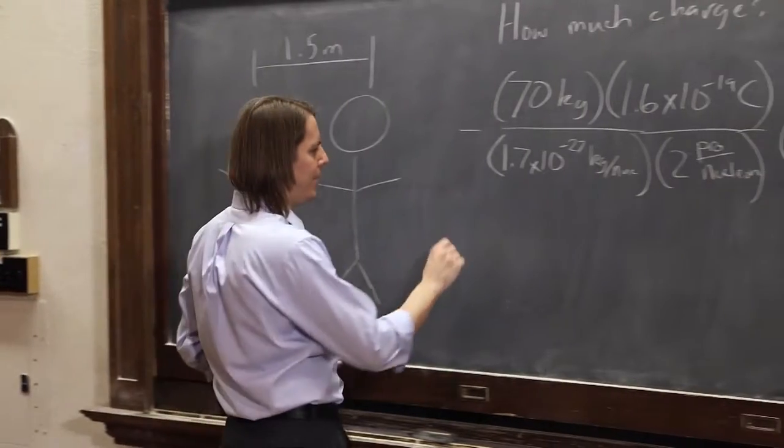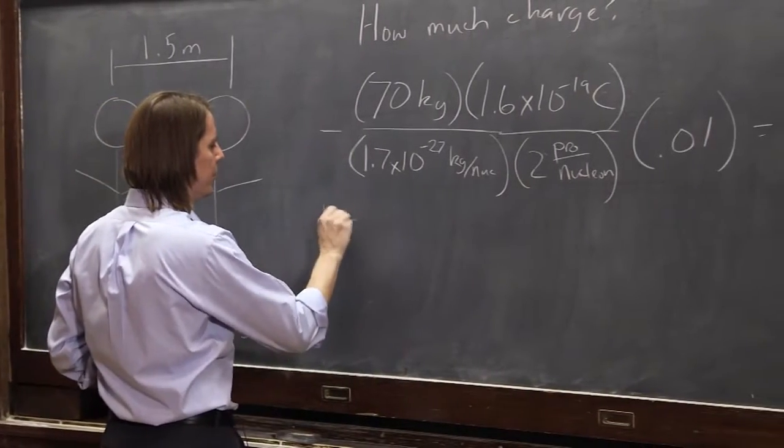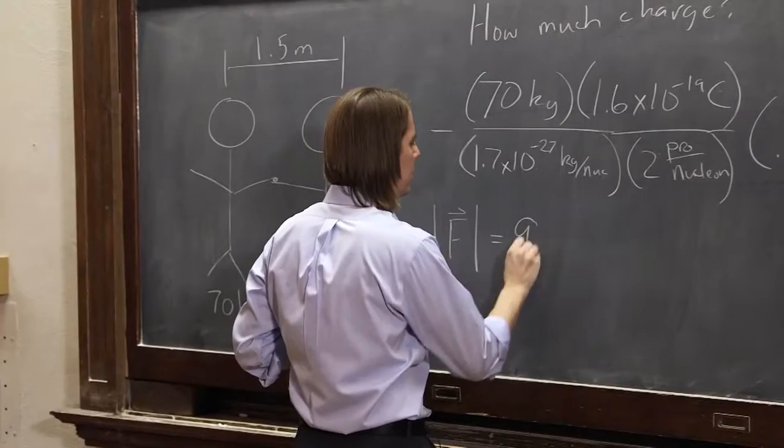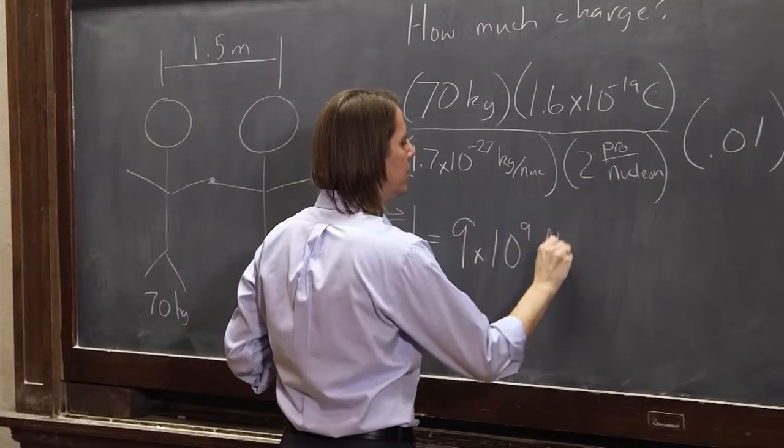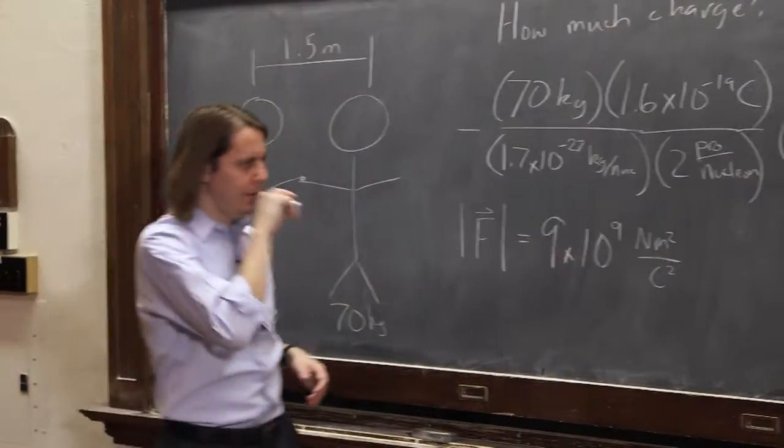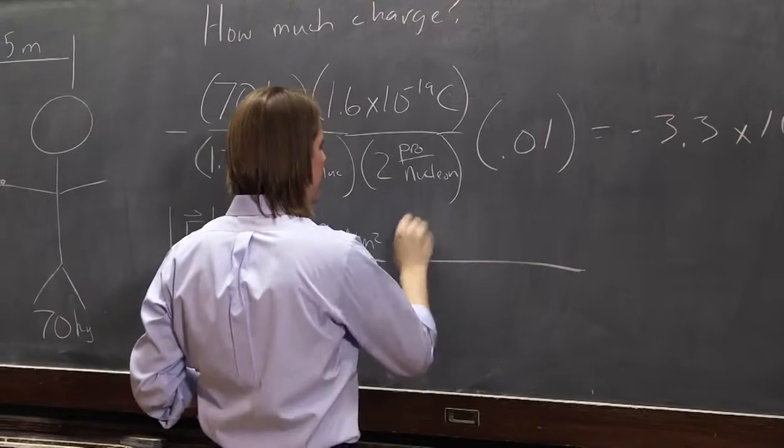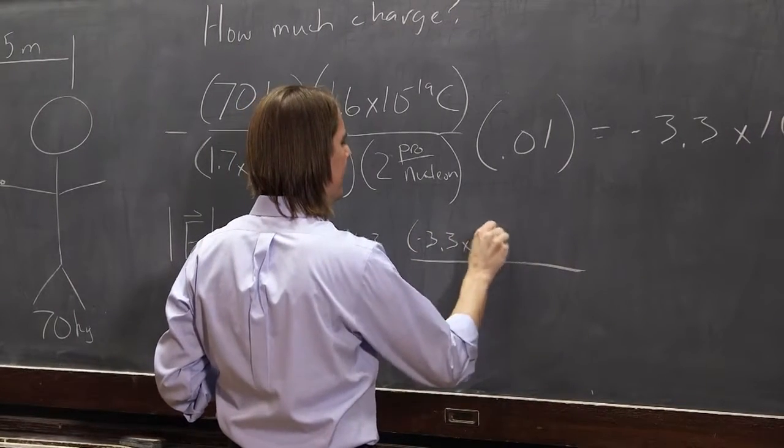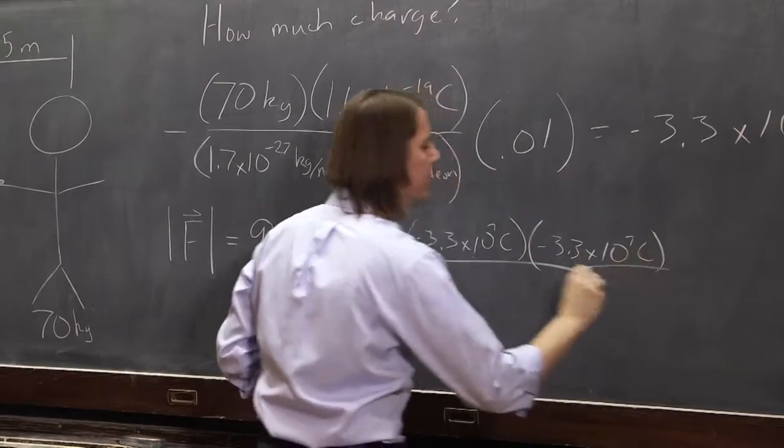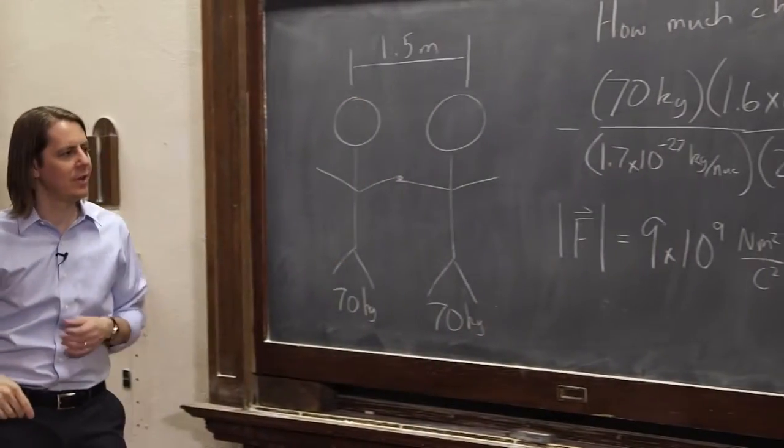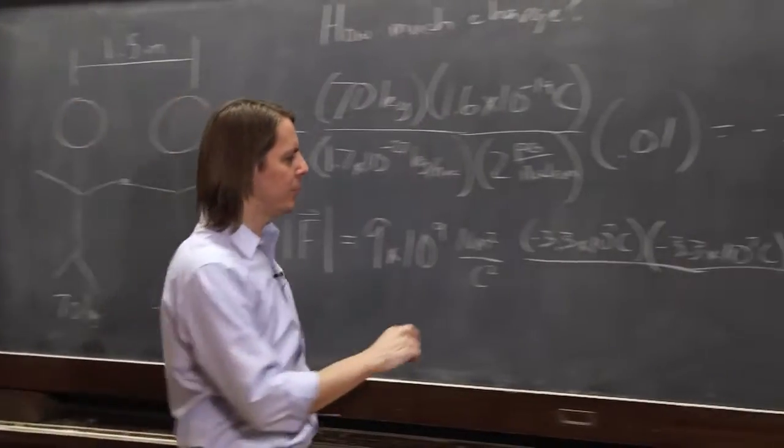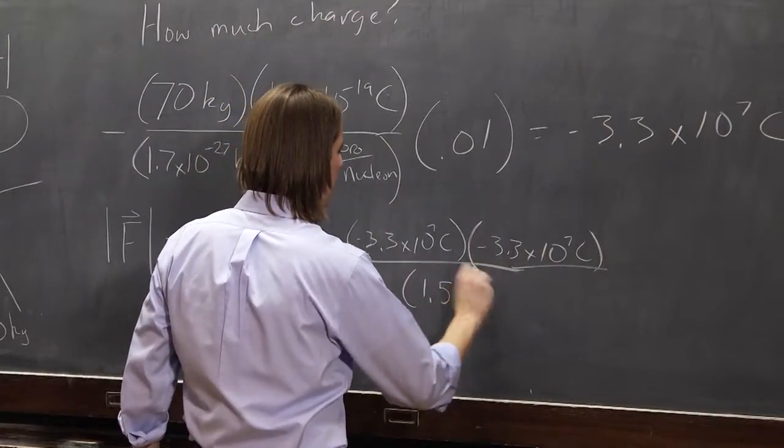So now let's calculate the magnitude of the force using Coulomb's law, the magnitude part. So it's 9 times 10 to the 9 newton meters squared per coulomb squared. There's Ke, times 3.3 times 10 to the 7 coulombs, times minus 3.3 times 10 to the 7 coulombs. So we're assuming the two people are identical. Each one has that charge. That's Q1 and Q2. And then in the bottom, I said they're 1.5 meters apart, squared.